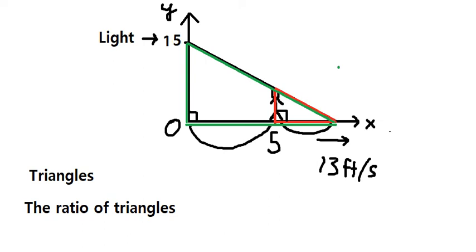Let's say the length of his shadow is S. So from 0 to this point, that is S plus 5, because we have 5 feet from 0 to the man.